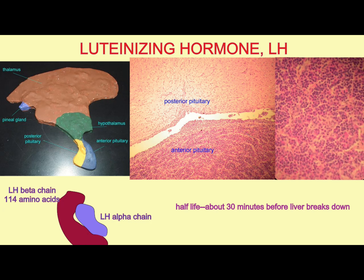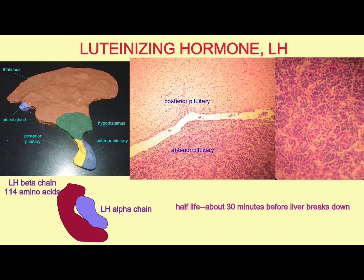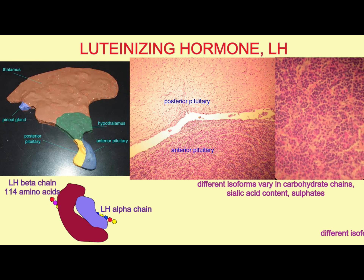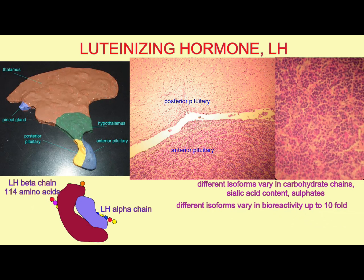As a result, different isoforms can vary both in when they're produced — with variations during different parts of the menstrual cycle and at different points of a woman's life. Certain forms are produced more frequently in younger women and others in older women. In addition, isoforms can vary in their bioreactivity, with up to a tenfold difference in the reactivity of different isoforms of luteinizing hormone.